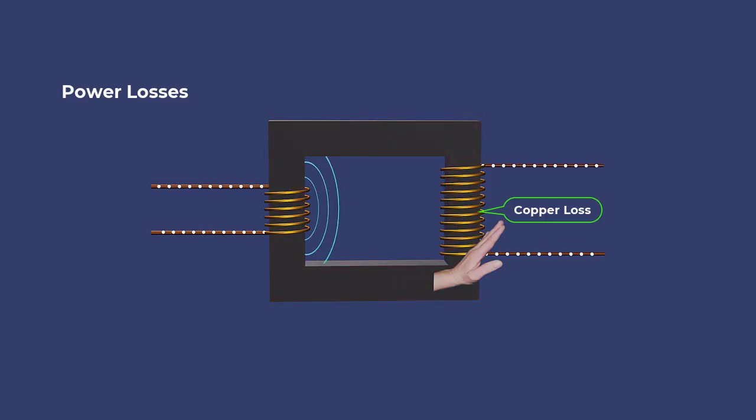Copper loss occurs due to resistance in the copper coils. These losses can be minimized using insulated wire with a large cross-sectional area.